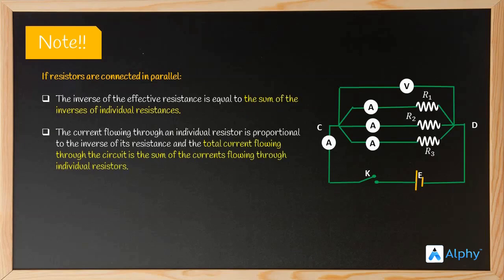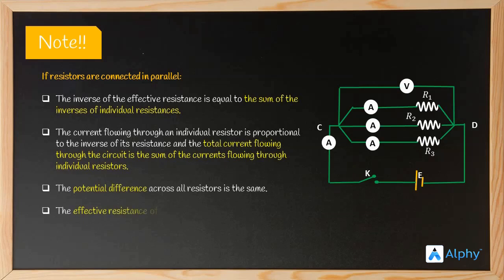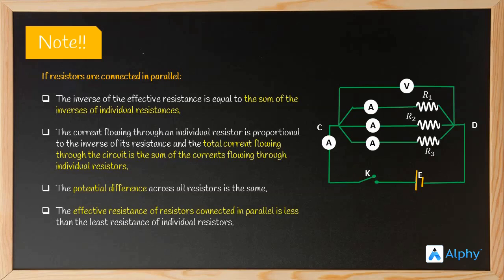So the current I is equal to V by Rp, meaning it is inversely proportional to the resistance. The total current flowing through the circuit is the sum of all individual currents: I equals I1 plus I2 plus I3, for any number of resistors connected in parallel. The effective resistance Rp is less than the least of the individual resistances R1, R2, and R3.